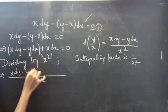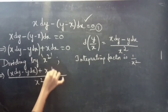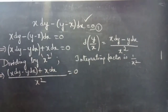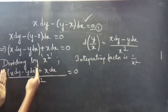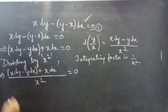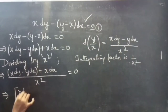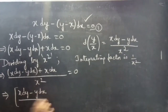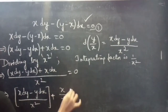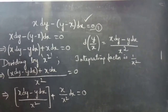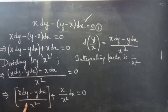We get (x dy minus y dx plus x dx) divided by x² equals to 0. We can split this into two terms: (x dy minus y dx)/x² plus x/x² dx equals to 0. In the next step we can apply the d(y/x) formula, which will make it easy to integrate and get the solution.